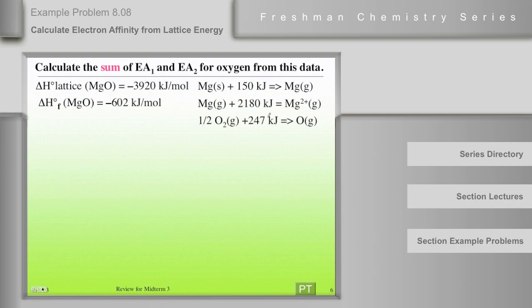So what we would have to do to solve this problem is to set up the cycle, and we have enough information so the electron affinities of oxygen will be the only unknown.